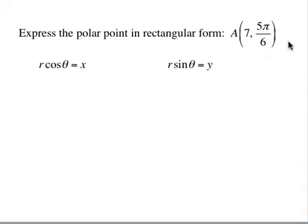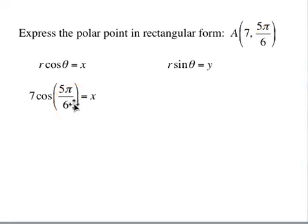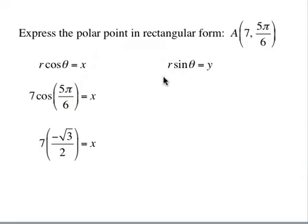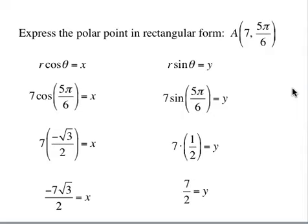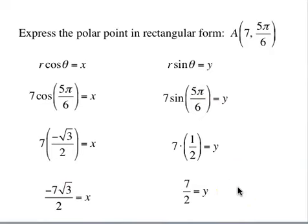x = r·cos θ = 7·cos(5π/6). In quadrant 2, cosine is negative; the reference angle is π/6 and cos(π/6) = √3/2, so x = 7·(-√3/2) = -7√3/2. For y: y = r·sin θ = 7·sin(5π/6). In quadrant 2, sine is positive; the reference angle is π/6 and sin(π/6) = 1/2, so y = 7·(1/2) = 7/2. Therefore (r,θ) = (7, 5π/6) is equivalent to (x,y) = (-7√3/2, 7/2).